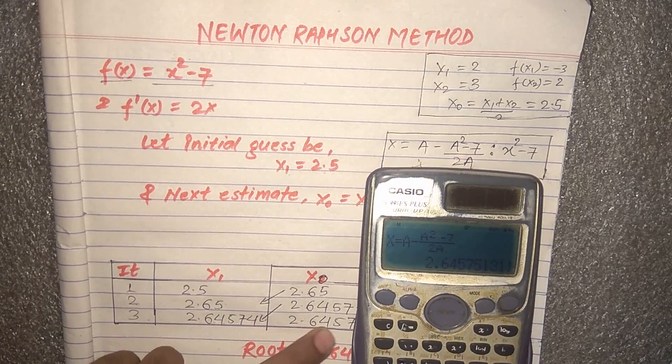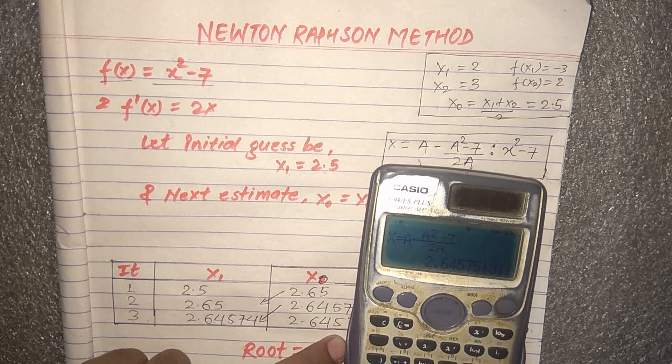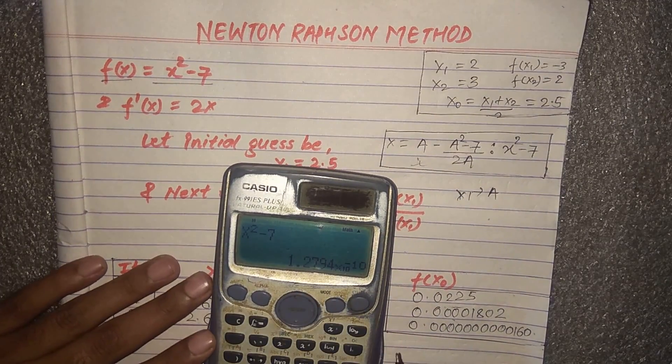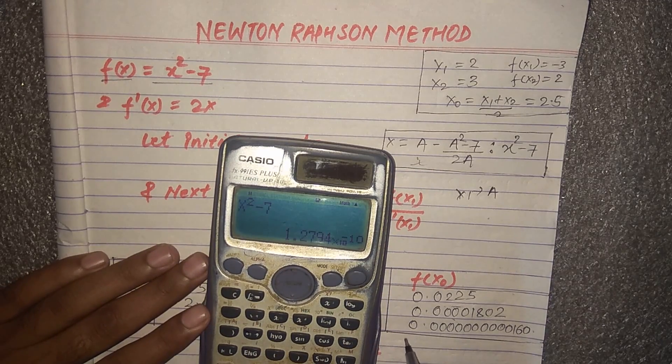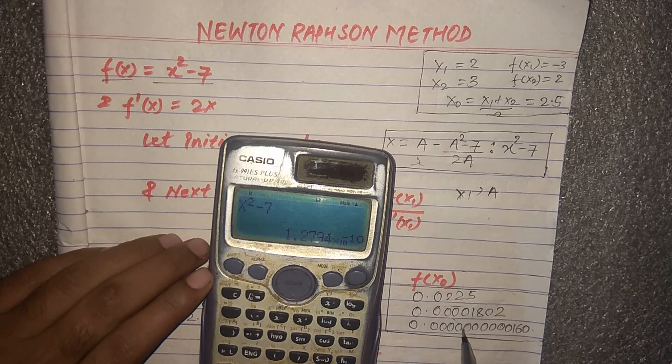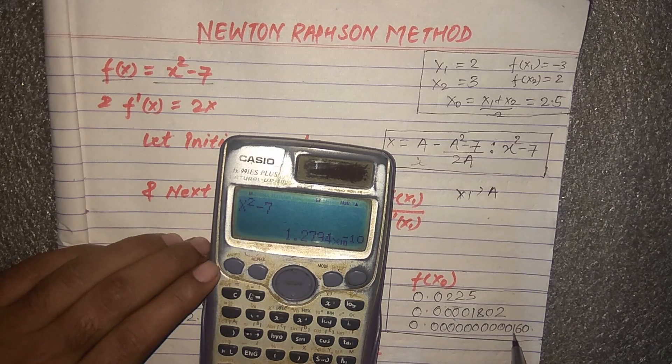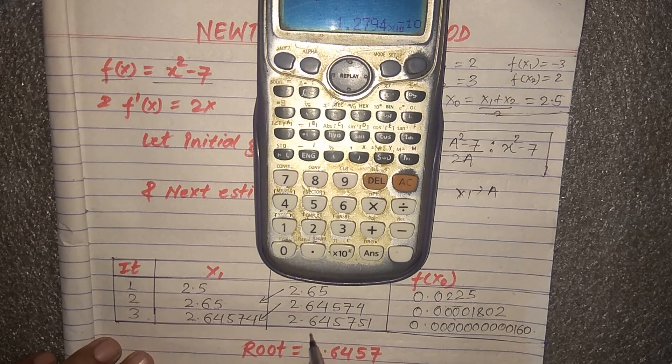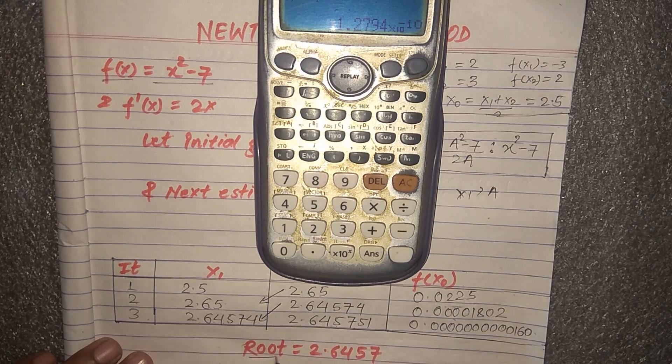The functional value will be 1.2794 × 10⁻¹⁰, which equals 0.0000000001279. Finally you get the root 2.6457 and 2.6457.